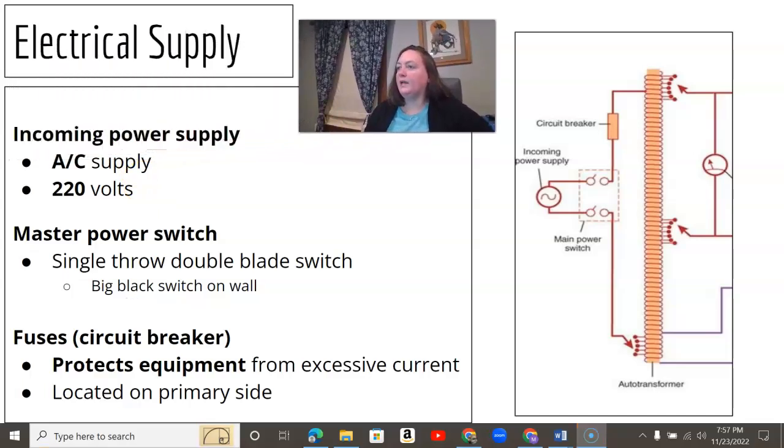Your electrical supply, the incoming power, is alternating current, and all three of your transformers also work off of alternating current. So it's AC coming in, and about 220 volts is your incoming power. You have a main power switch, which if you've looked at any of your x-ray rooms, there's a big black switch on the wall. And then there's fuses and a circuit breaker here to protect your equipment from excessive current, all located on the primary side.